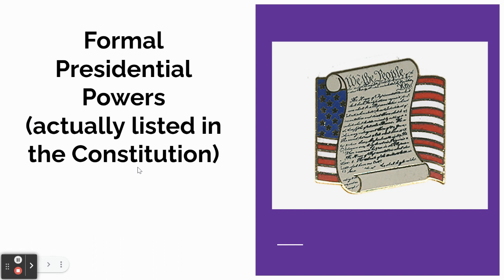The first are powers that we call formal presidential powers. If you are looking at formal presidential powers, you're looking at powers that are actually listed in the Constitution. Anytime you see the word formal, it means it can be found within that document. Most of the presidential powers are found in Article Two of the Constitution, so formal presidential powers can be looked up and read about there.